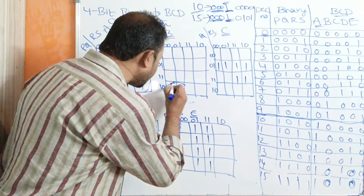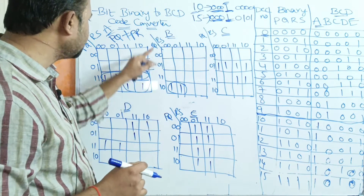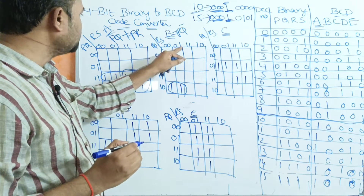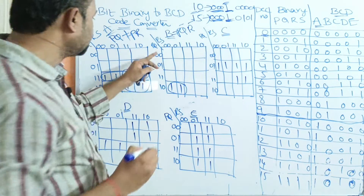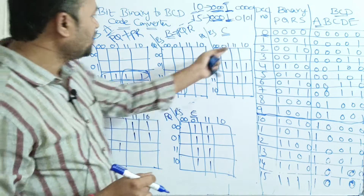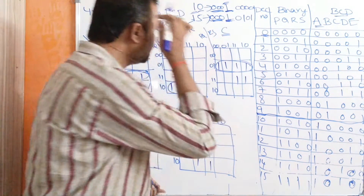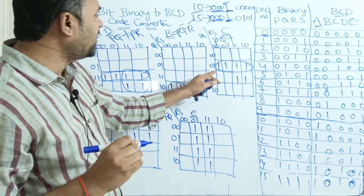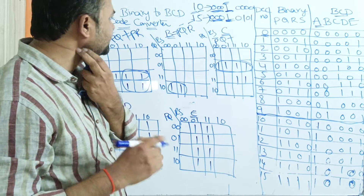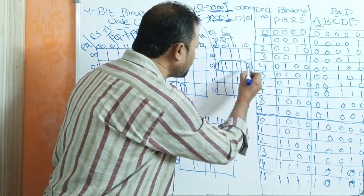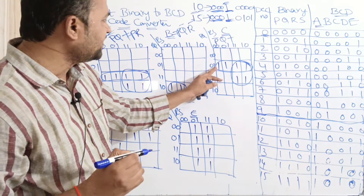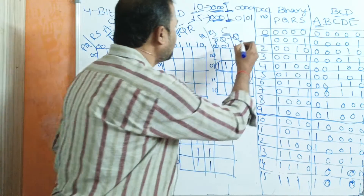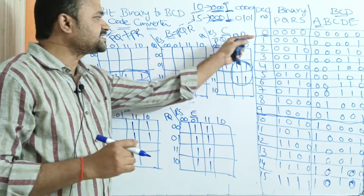Now let us see about B. We can make these 2 cells as one group. The minterm is P=1, Q=0, meaning PQ̄. The R value is 0, giving R̄. So that term is PQ̄R̄. Next, we can make these 4 cells as one group for the expression P̄Q, since P=0, Q=1 and RS values change. To cover the remaining 2 ones, we combine 4 cells; Q is common giving Q, and R is common giving R. So the simplified expression for C is P̄Q + QR.